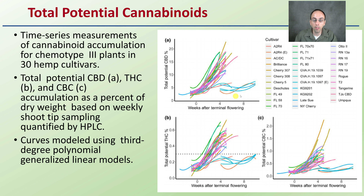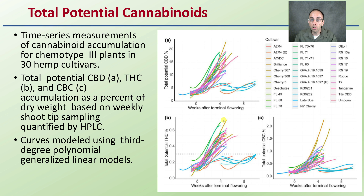The CBD is located right here, here is the THC, and this is the graph for CBC. These are curved models using third-degree polynomial generalized linear models, and we see the cultivars here color-coded. We're seeing overall general trends of an increase in cannabinoids as we look at later weeks into flower. Some stayed flat, some actually decreased and increased for a bit, some are more linear, some are more exponential.